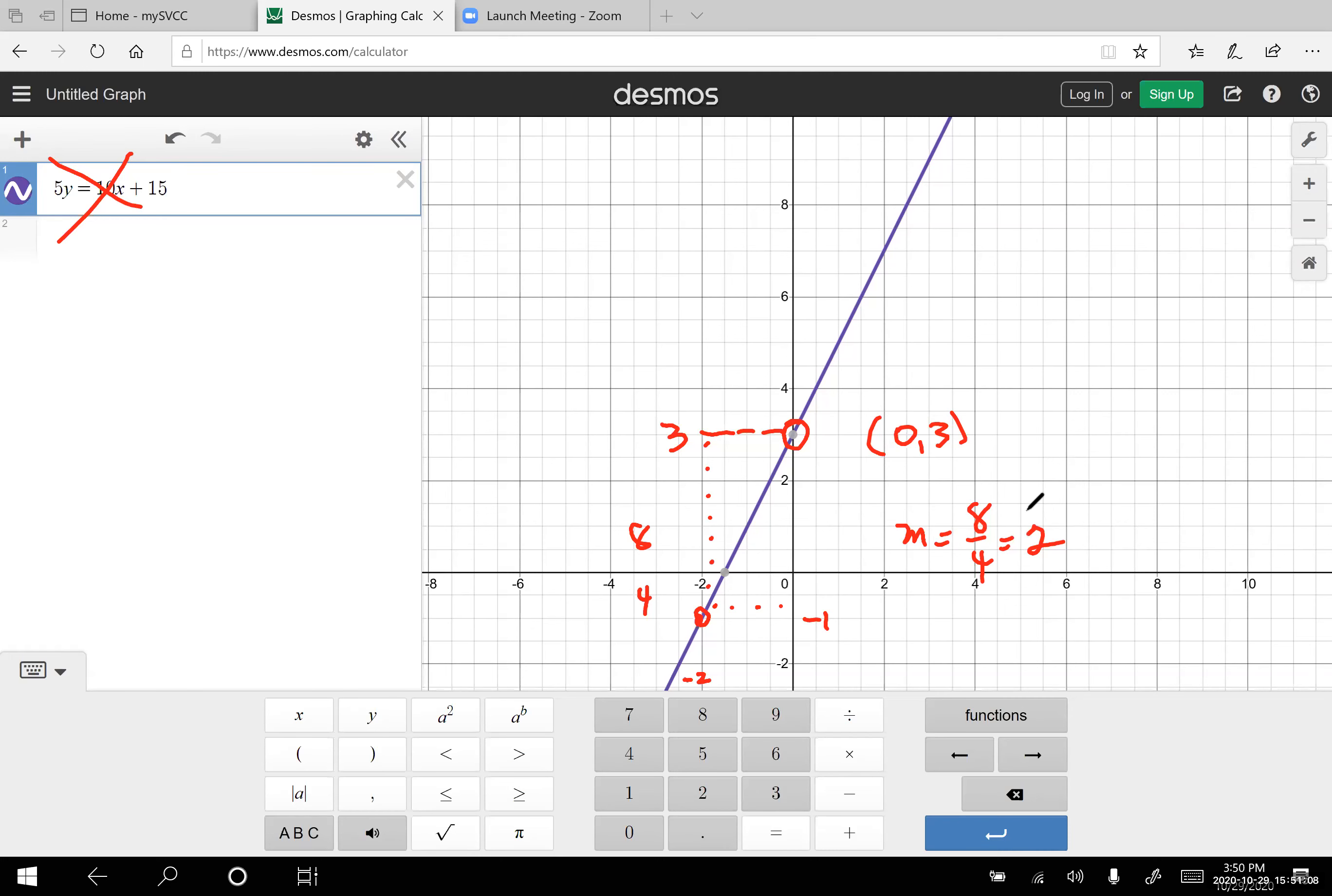And note that positive slopes increase from left to right. If our line was decreasing from left to right, that's a negative slope. That'll show up as a negative slope, anything that goes downhill.